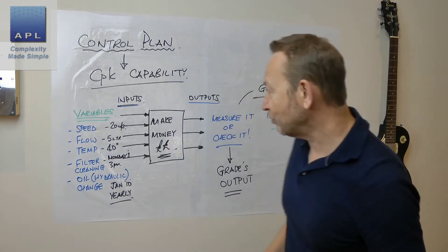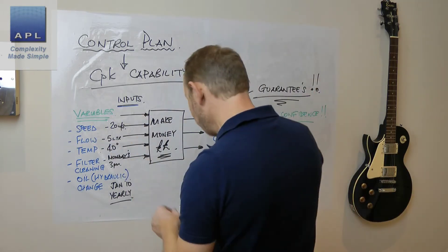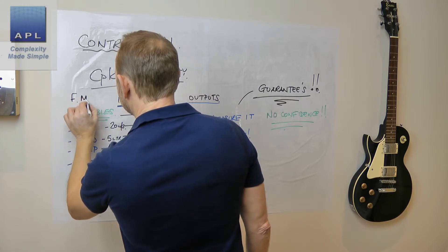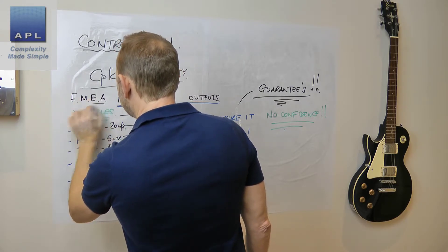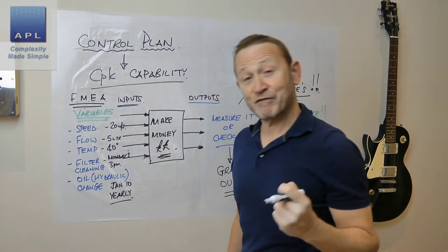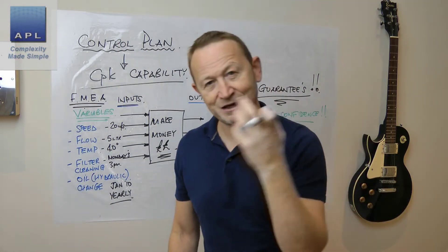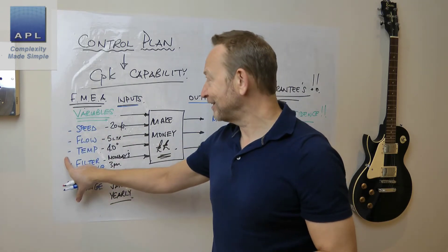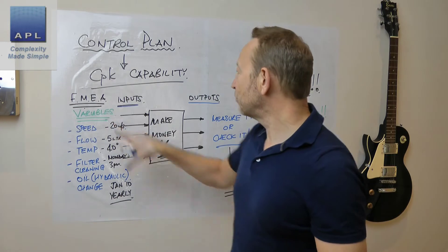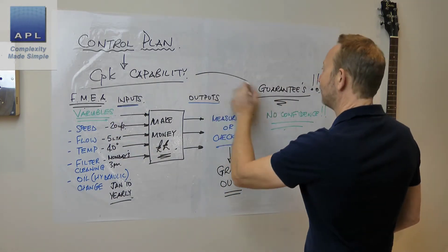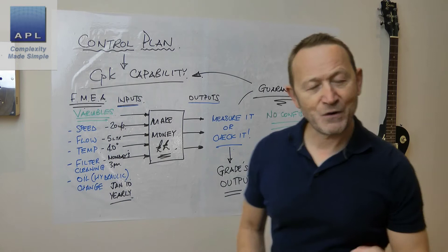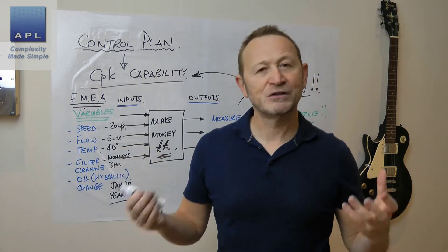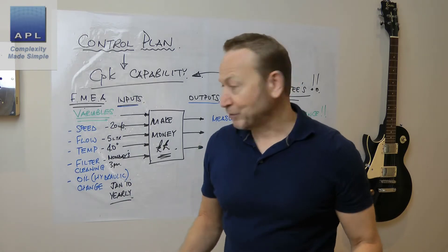What you're supposed to do is make this flow out of your FMEA process. That's what an FMEA is for — it's to create the initial control plan. If you use your FMEAs properly, that's exactly what they do. They would also guarantee the process capability. So the control plan should flow out of your FMEA.